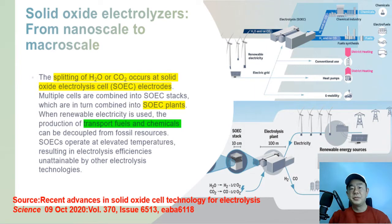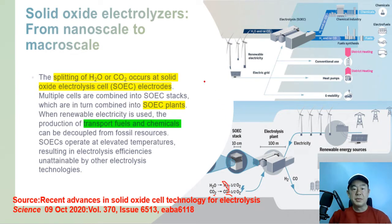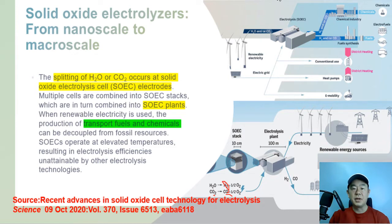SOEC not only produces pure hydrogen, but can also be used as a tool that converts CO2 into CO. This is called co-electrolysis, which decomposes water and carbon dioxide simultaneously. Hydrogen and carbon monoxide can be obtained by electrolyzing water and carbon dioxide using electricity generated from renewable energy such as sunlight and wind power. Transport fuels and chemicals such as methanol and jet fuels can be obtained by using them.